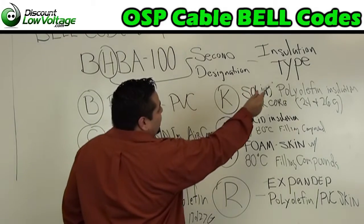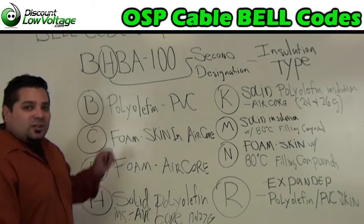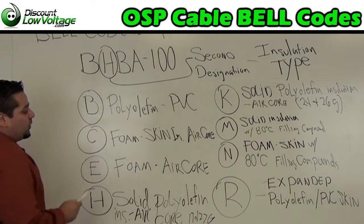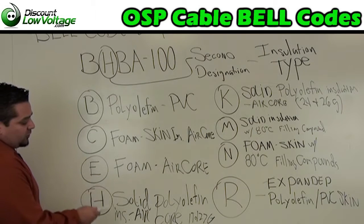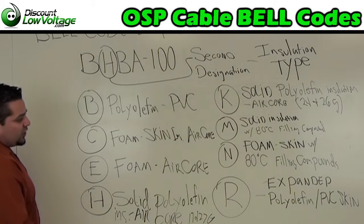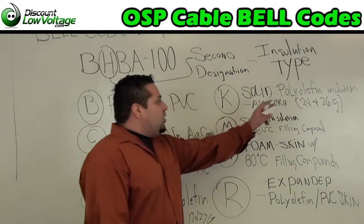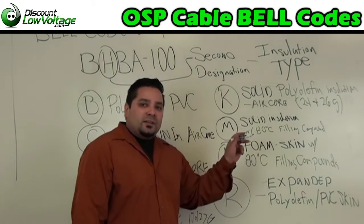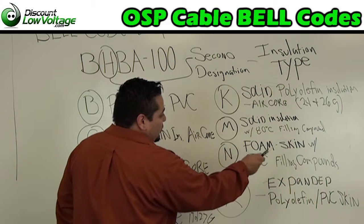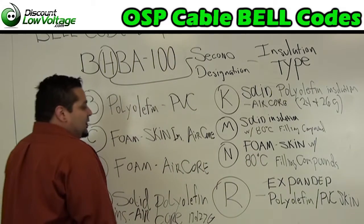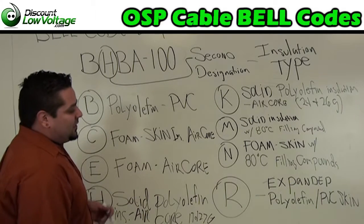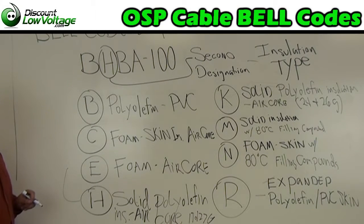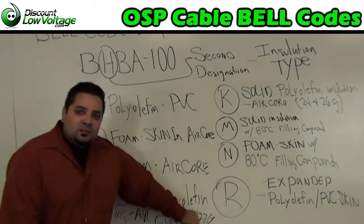For our second designation, it stands for the insulation type. B, poly PVC. C, foam skin insulation air core. E, foam air core. H, solid poly air core for 19 and 22 gauge cable. K, solid poly insulation air core for 24 and 26 gauge. M, solid insulation with an 80 degree Celsius filling compound. N, foam skin with an 80 degree Celsius filling compound. R, expanded poly PVC skin insulation. We have H, so we have a solid poly insulation air core, and this also tells us we have a 19 to 22 gauge cable.